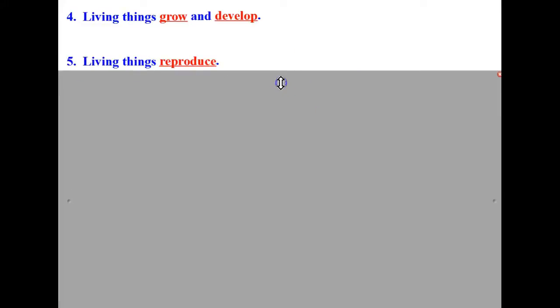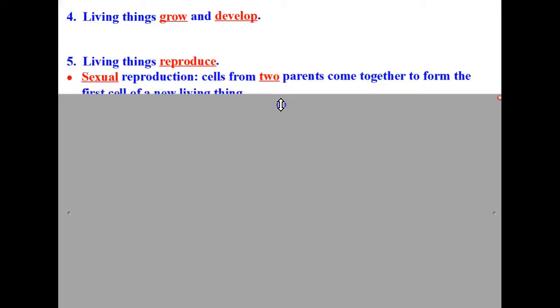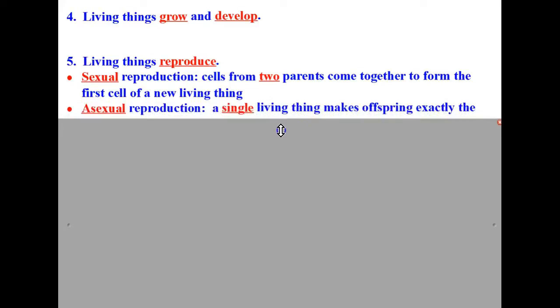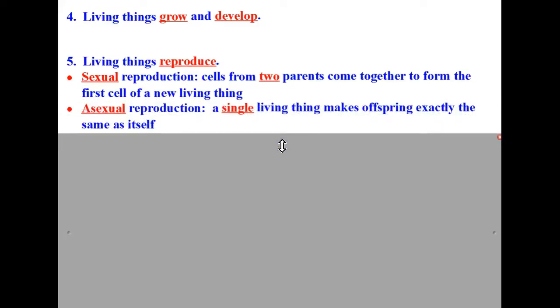The fifth characteristic all living things have in common is that living things reproduce. All living things make new, similar living things. Most plants and animals engage in what is called sexual reproduction. In sexual reproduction, cells from two parents come together to form the first cell of a new living thing. Other living things reproduce through asexual reproduction, in which a single living thing makes offspring exactly the same as itself.